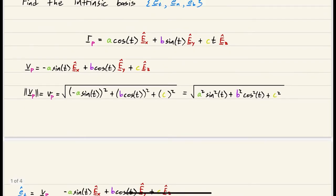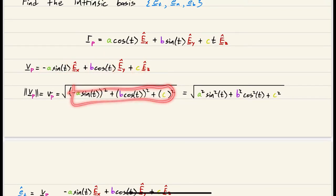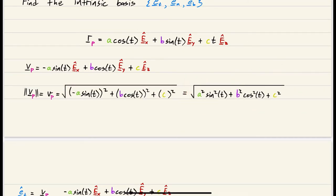Next, we want to find the speed. Speed is the magnitude of the velocity vector, denoted by double vertical bars. We find the magnitude by squaring each component, adding them together, and taking the square root. So we square each of the three components, add them all together, take the square root, and that's our speed.